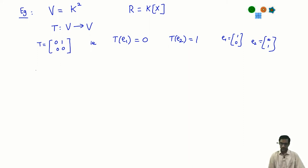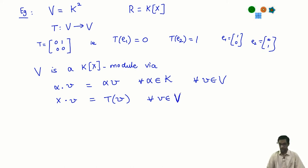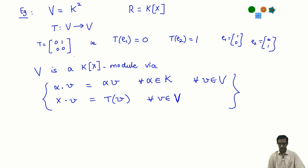I have fully specified a vector space and an operator, so I have fully specified the module structure of V as a module over k[x]. The constant polynomials act by the usual scalar multiplication. The special polynomial x acts on V according to the operator T: the action of x is given by T. From this you can figure out how any polynomial acts — you just use higher powers of T.